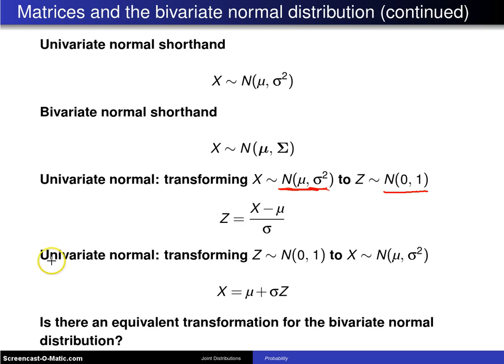Well, one other thing you can do in the univariate case is if you instead want to go from a standard normal to a general normal random variable, all you need to do is solve this equation for x, and when you do, x equals mu plus sigma z can be used to go from a standard normal to a general normal.